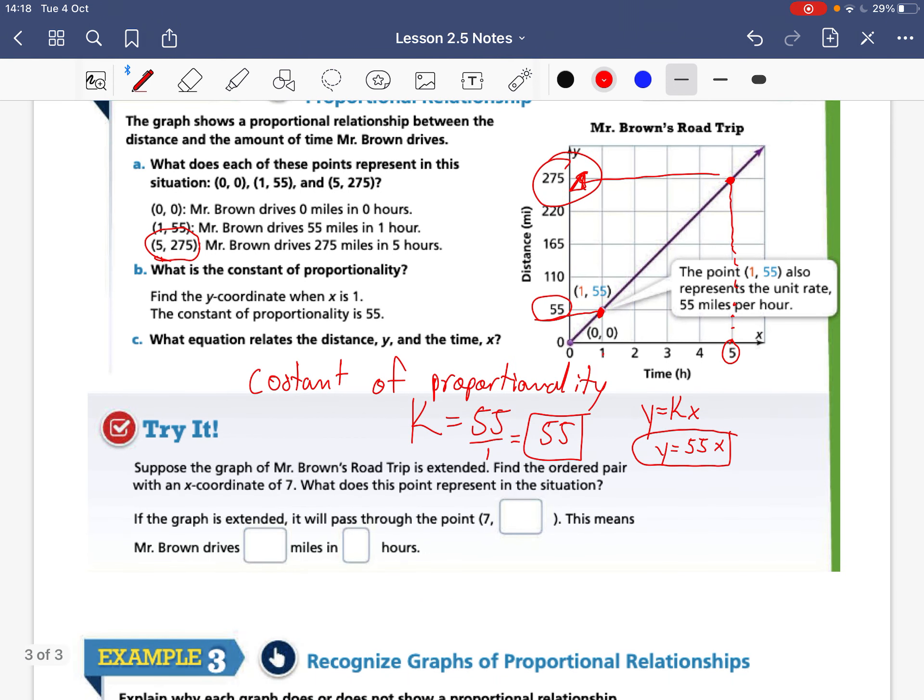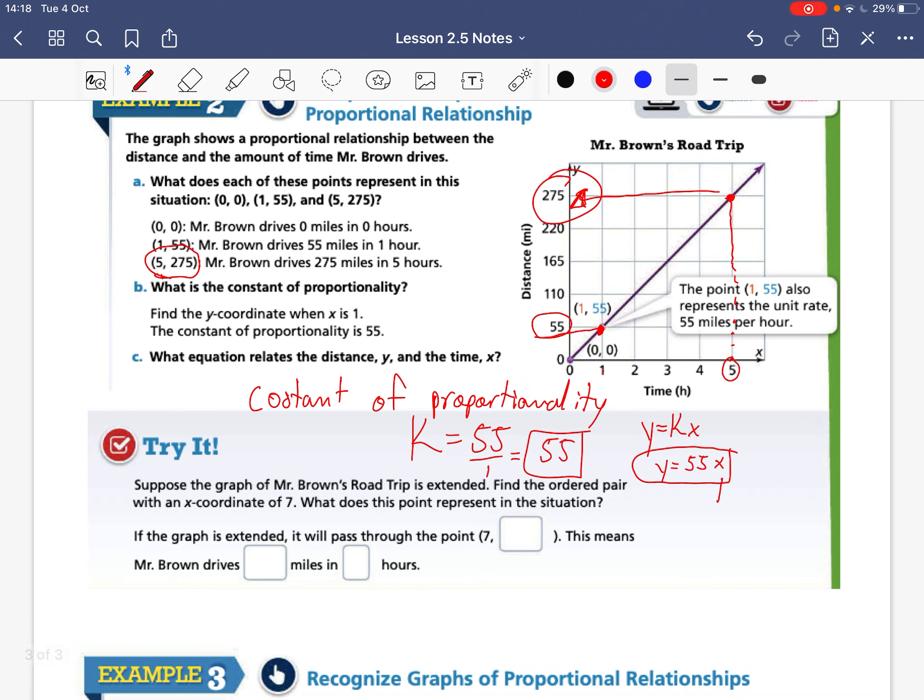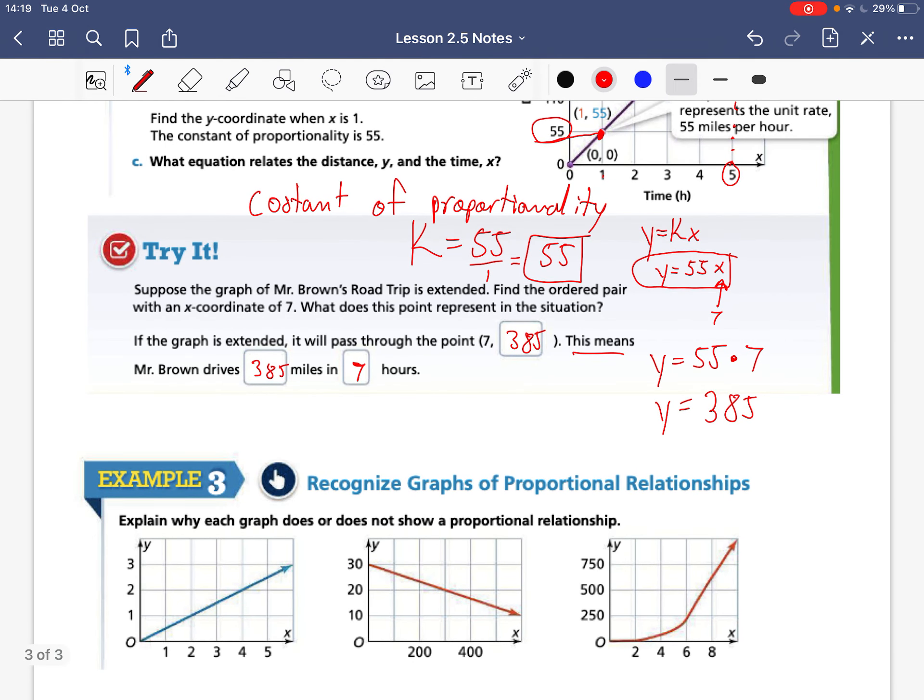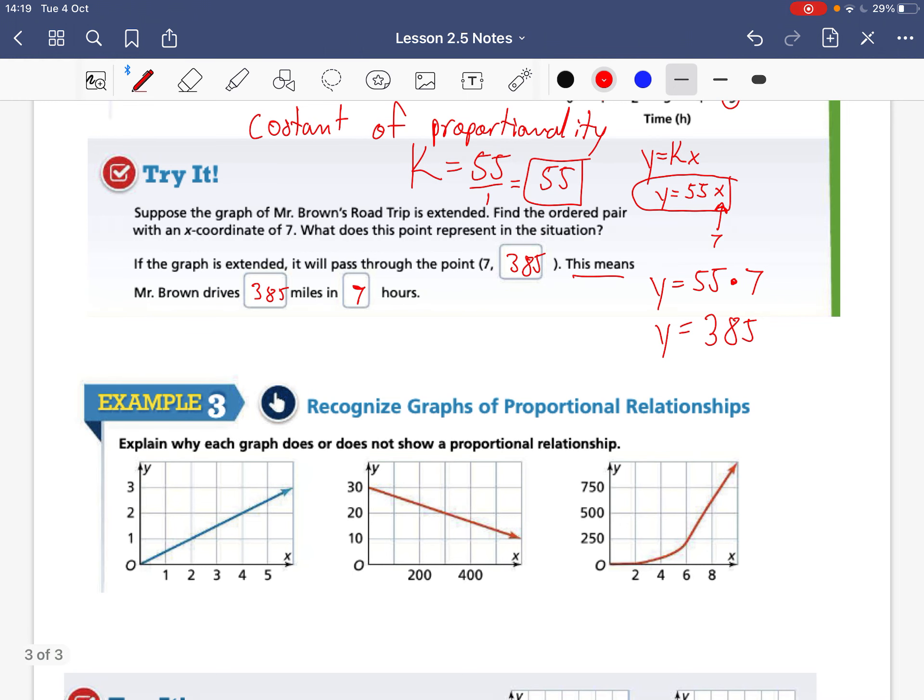So suppose the graph of Mr. Brown's road trip is extended find the ordered pair of the x coordinate of 7. So if the graph is extended it will pass through the point 7 comma what? Well 7 is that value here so we just take y equals 55 times 7 so y equals 55 times 7 and that gives us 385 so it would be 385. This means that Mr. Brown drives 385 miles in how many hours? 7 hours.